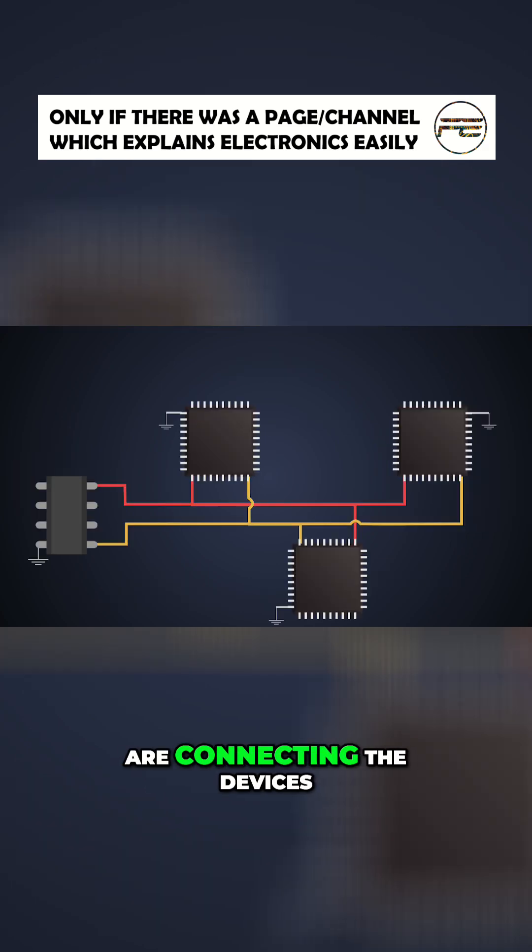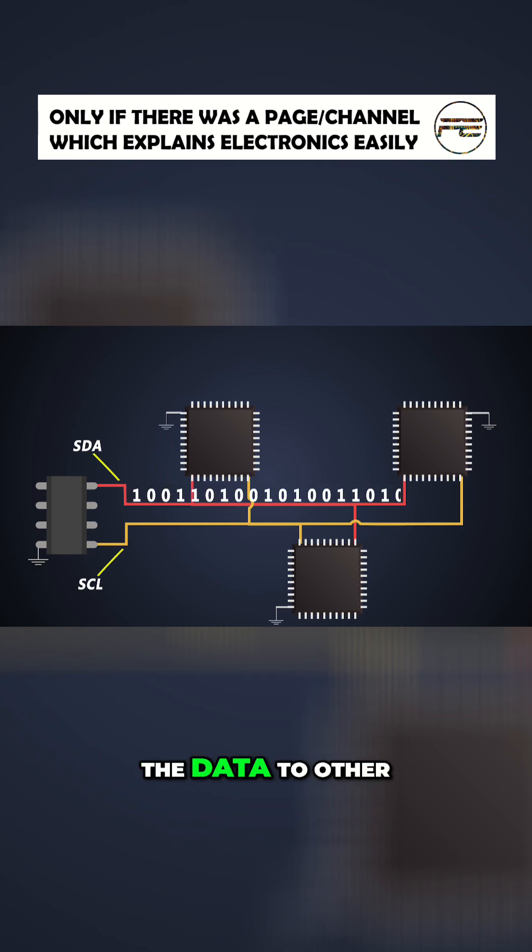The two wires connecting the devices are SDA, the data line, and SCL, the clock line. The SDA line sends data to other devices and SCL is responsible for synchronization.